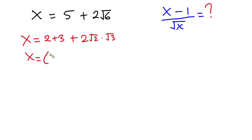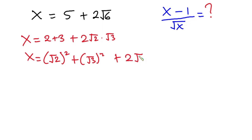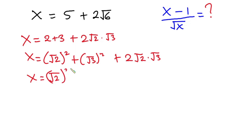Here we have x equal to: 2 is the same as (√2)², and 3 is also the same as (√3)², then plus 2·√2·√3. So I can rewrite this as x = (√2)² + 2·√2·√3 + (√3)².